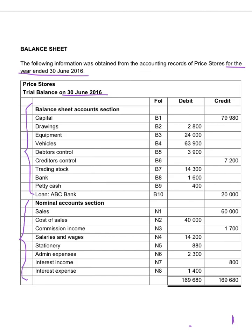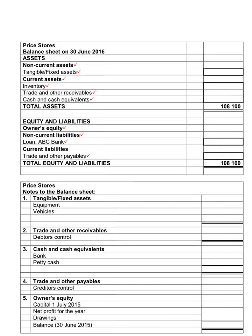We will look at the equipment, which is $24,000, and vehicles, which is $63,900. In the note for fixed assets I will indicate that the equipment is $24,000 and the vehicles is $63,900. I will add them together to see what the total amount is. My total fixed assets is $87,900, and I will show in the balance sheet $87,900. Because we don't have a fixed deposit in this exercise, the non-current assets total amount will also be $87,900.